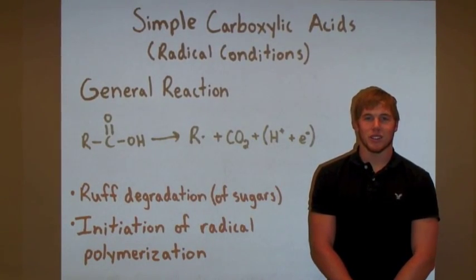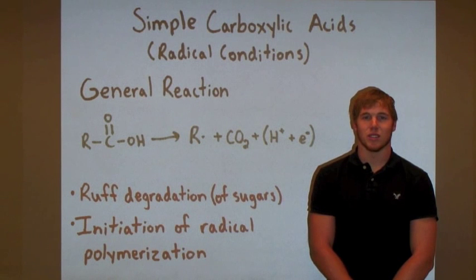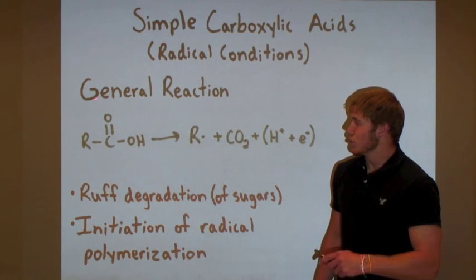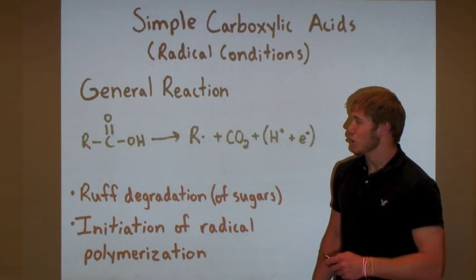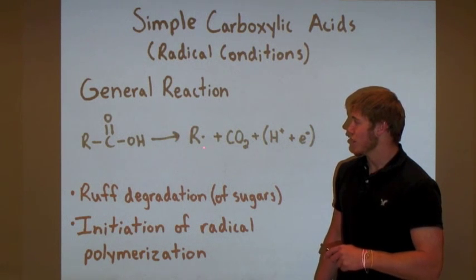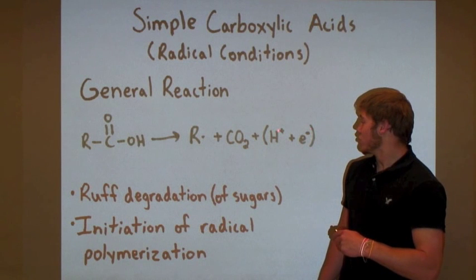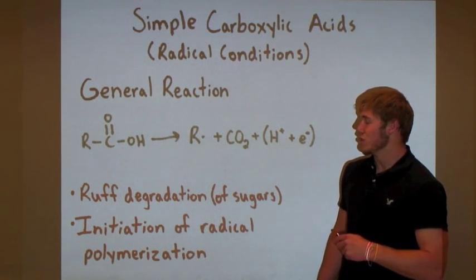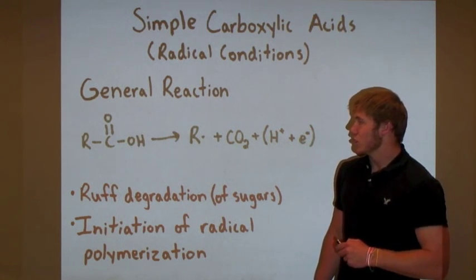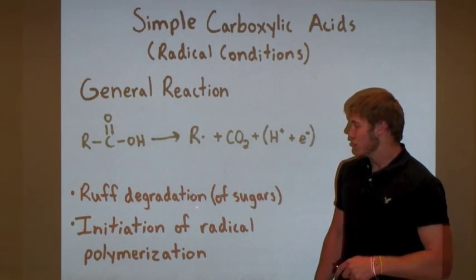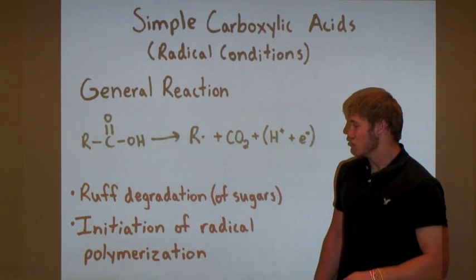Now let's look at the decarboxylation of simple carboxylic acids, which occurs only under radical conditions. In the general reaction, a simple carboxylic acid under appropriate conditions decarboxylates to form a radical and carbon dioxide, and a proton and electron which may or may not be removed as a pair. This decarboxylation occurs in the well-known Ruff degradation of sugars and also sometimes in the initiation of radical polymerization.